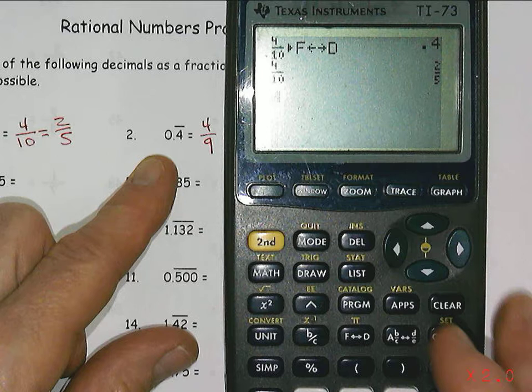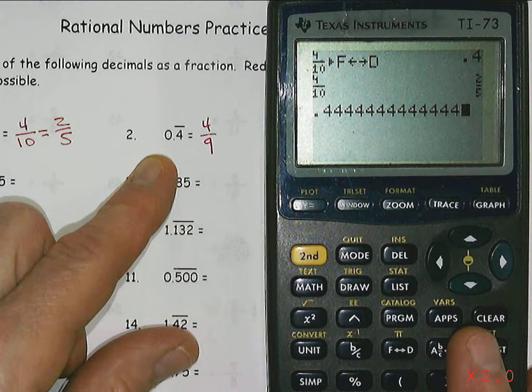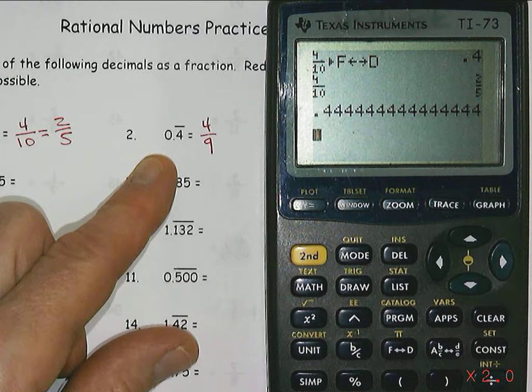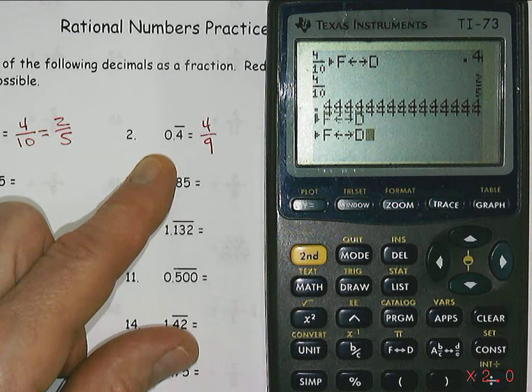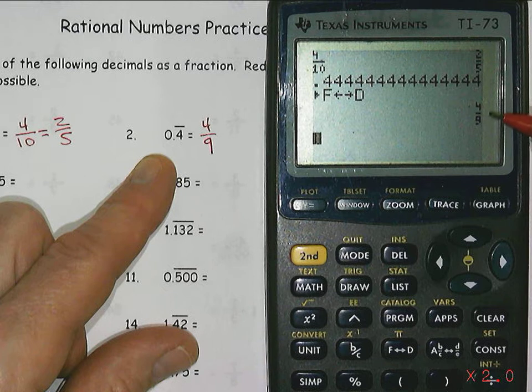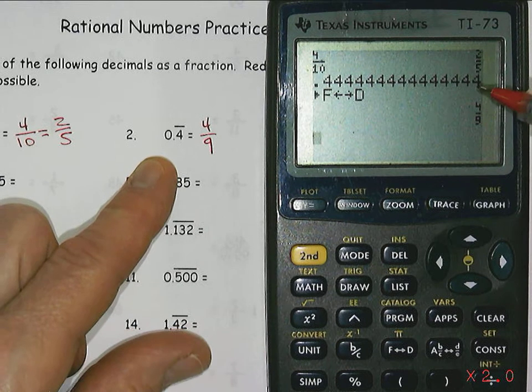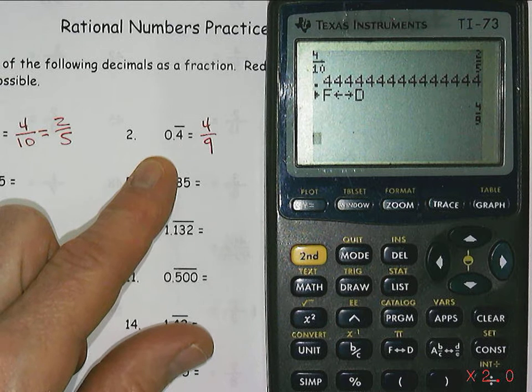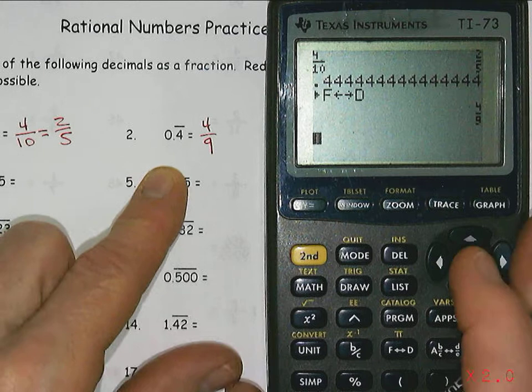But I could actually, if I didn't know that, put 0.4 and just put a whole bunch of fours in there so that it gets the idea that this is repeating. And then the fraction to decimal button, if I put that in and enter, it'll actually give me the fraction four ninths. So it will convert it for me. I have to make sure I put in enough fours that the calculator knows that this is really a repeating decimal, and so we get four ninths for that as well.